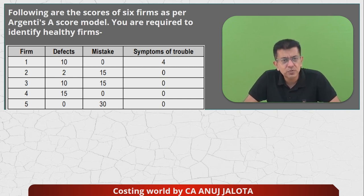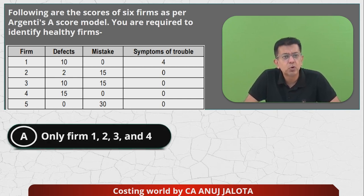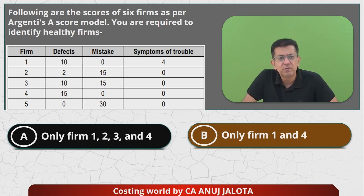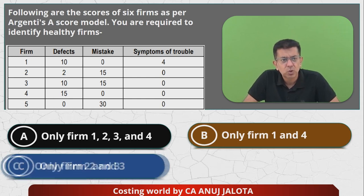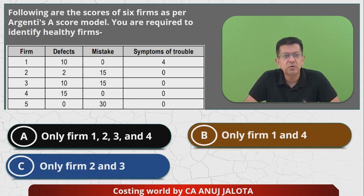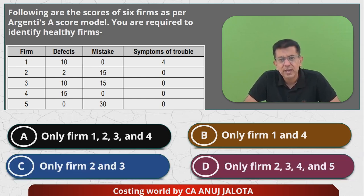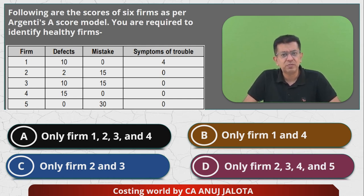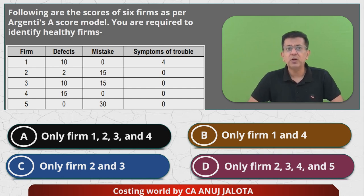The four options are: only forms one, two, three, four; only forms one and four; only forms two and three; and three, four, and five. You have to find out which forms are healthy.